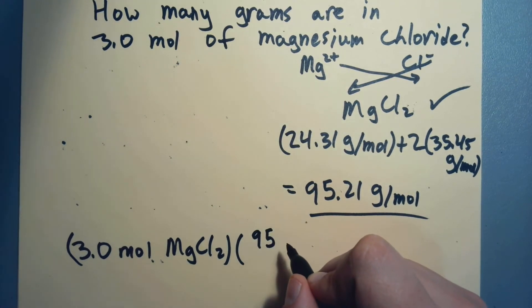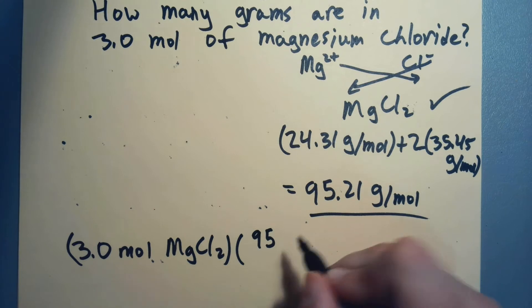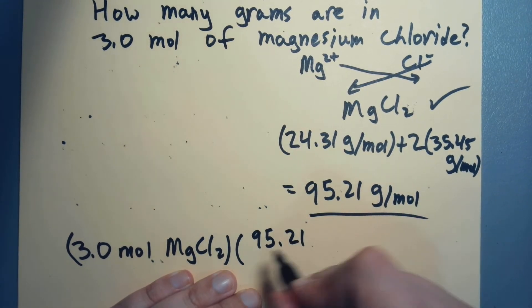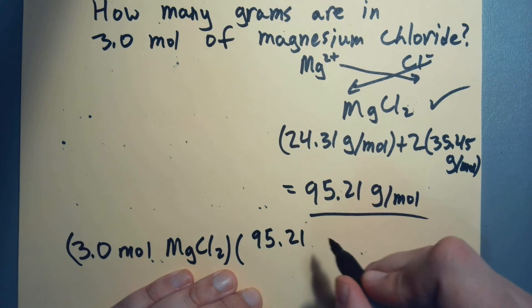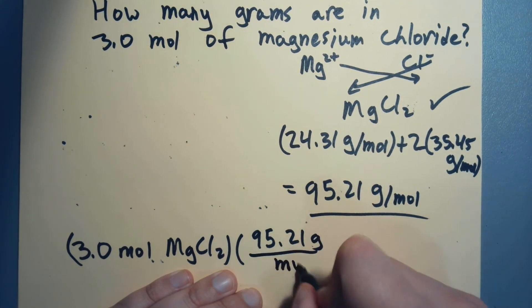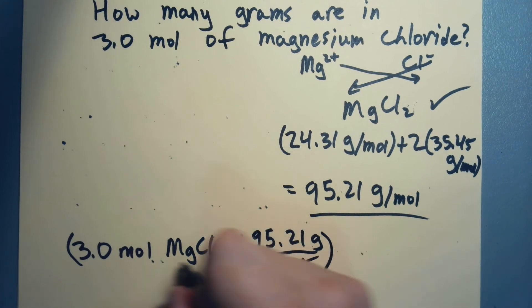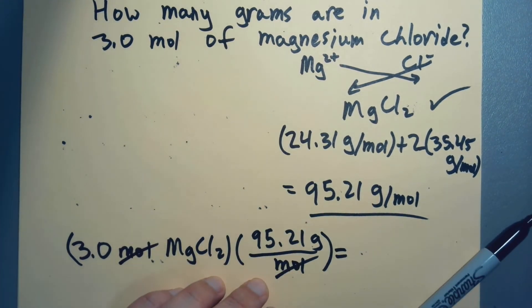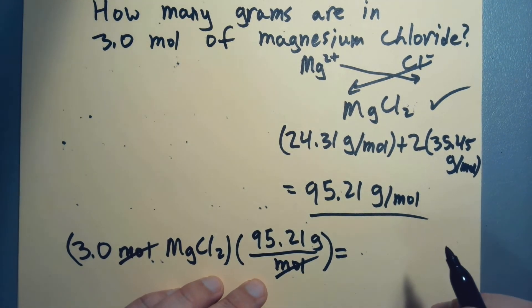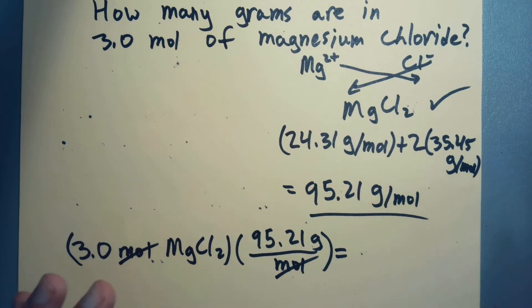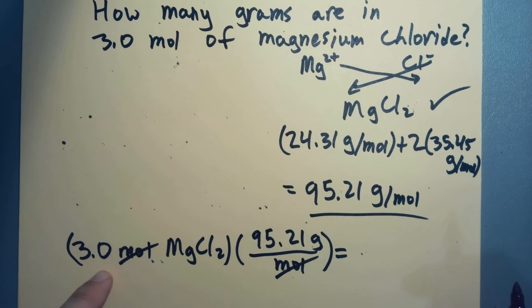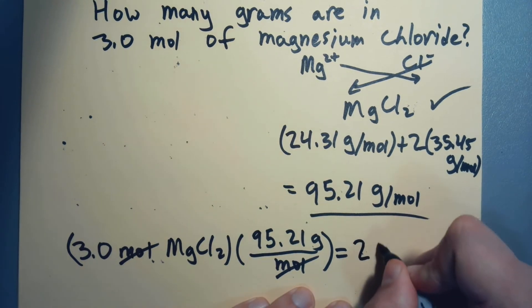It's the classic: is it 12 inches per foot or is it one foot over 12 inches? Either one is correct, it's just is it correct for what we need to do. So now moles will cancel, and we go 3 times 95.21, we get 285.63 according to my calculator, but we only get two significant figures because of 3.0.